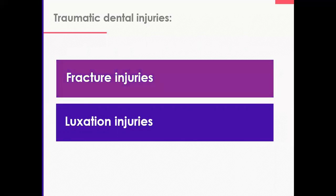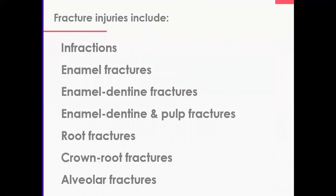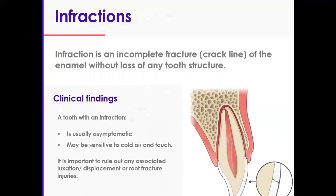This week I'll go through fracture injuries one a day, and next week luxation injuries. Fracture injuries include infractions, enamel fractures, enamel-dentin, pulp, root, crown-root, and finally alveolar fractures. Today we'll discuss infractions, which is in a way the easiest one. An infraction is an incomplete fracture of the enamel without any loss of tooth structure.